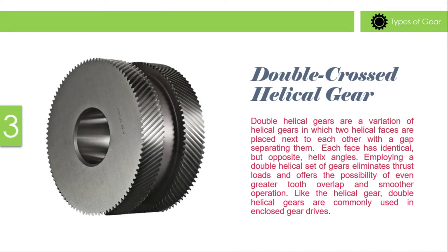Double helical gear: Double helical gears are a variation of helical gears in which two helical faces are placed next to each other with a gap separating them. Each face is identical but has opposite helix angles. Employing a double helical set of gears eliminates thrust loads and offers the possibility of even greater tooth overlap and smoother operation. Like helical gears, double helical gears are commonly used in enclosed gear drives.